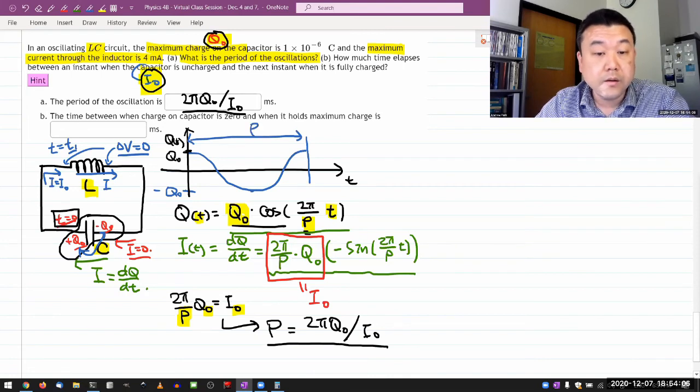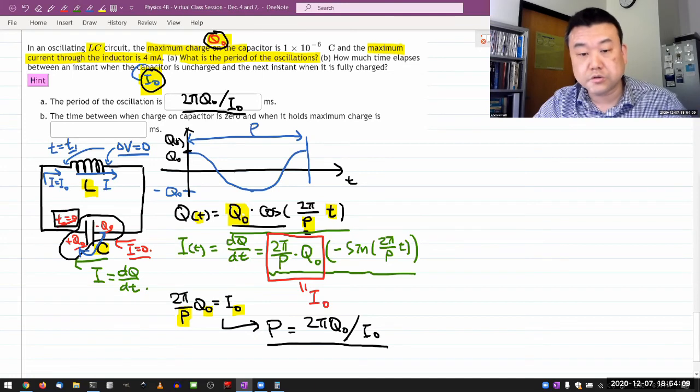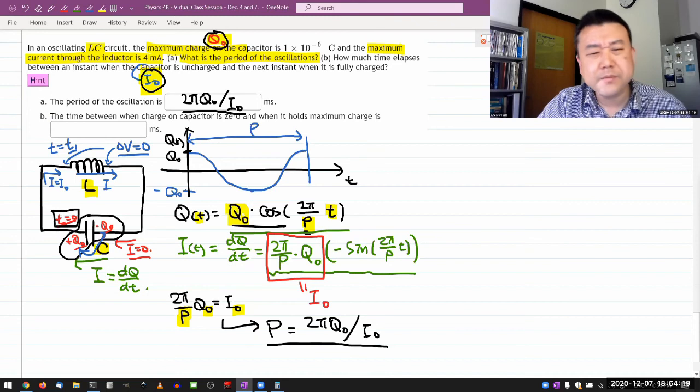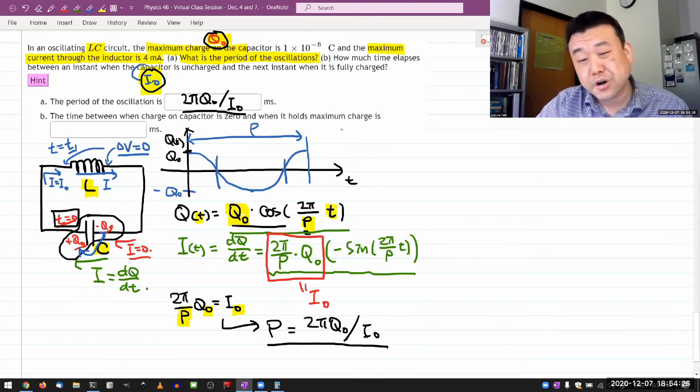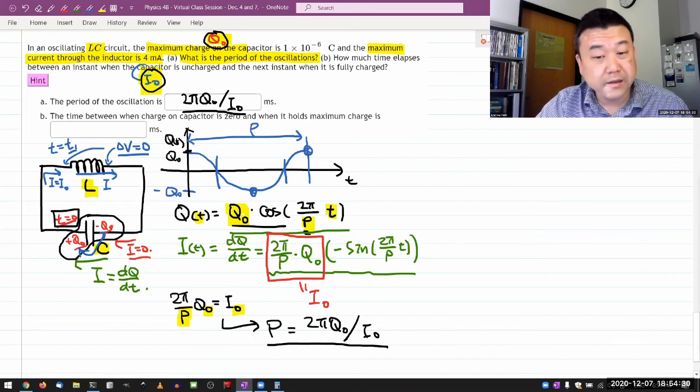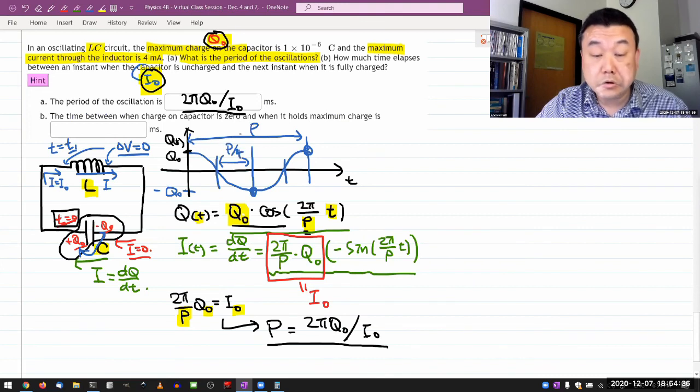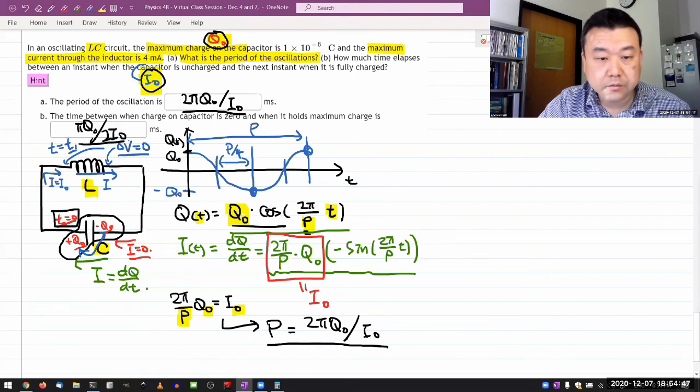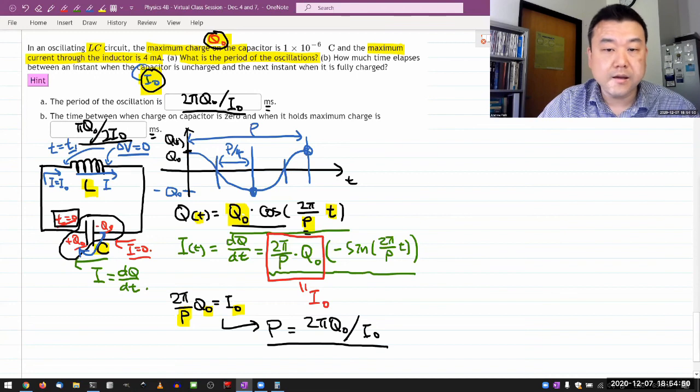So one period isn't simply going from the maximum amount of charge to another maximum amount of charge, you have to come back to the same sign. So with the way part b is worded, the time between when the charge of capacitor is zero, so either this point or this point, and when it holds maximum charge. I would say both here and here are related to maximum charge. So it's asking for a quarter of a period. So that's what I should have here. This divide by four or simplifying some things, it should be pi q naught over two i naught. Watch the powers of 10 and the prefixes and make sure you are putting it in milliseconds.